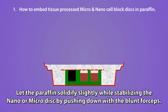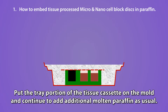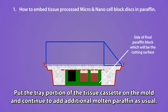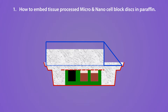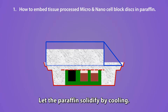Let the paraffin solidify slightly while stabilizing the Nano or Micro Disc by pushing down with blunt forceps. Then put the tray portion of the tissue cassette on the mold and continue to add additional molten paraffin as usual. Let the paraffin solidify by cooling.